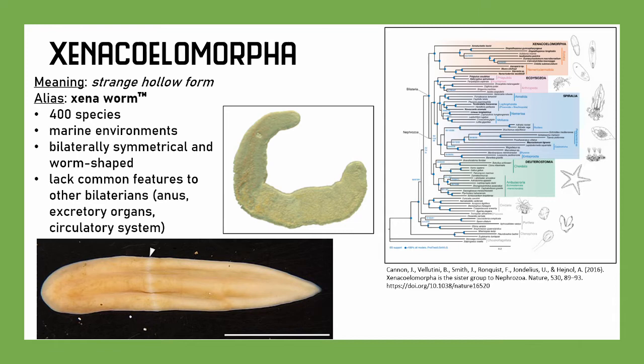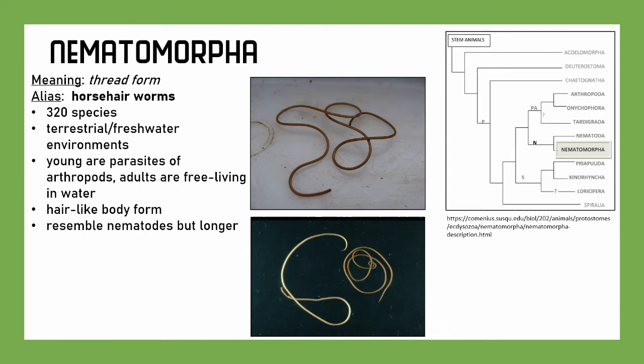Stretching the bounds of biology, we have Nematomorpha. It also means 'thread form.' These are the horsehair worms, also known as Gordian worms from the famous Gordian knot — because they're so tangled up. There are 320 species. The young are parasites of terrestrial arthropods, while the adults are free-living in water, usually standing water. They have a very hair-like body form, and they actually resemble nematodes a lot — but they're longer than any typical nematode has any right to be. Unsurprisingly, they're pretty closely related to nematodes.